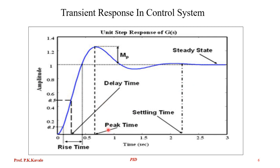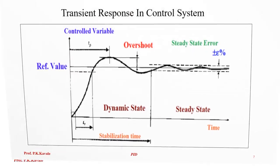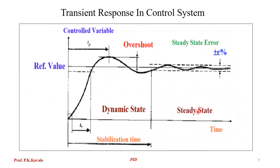There are some terminologies: peak time, settling time, delay time, and steady state. The dynamic state ends at what is known as the stabilization time. There is also steady state error — we try to reach 100% but due to some errors, we allow a tolerance zone, and the system will fluctuate within that zone. This fluctuation within the tolerance band is known as steady state error.